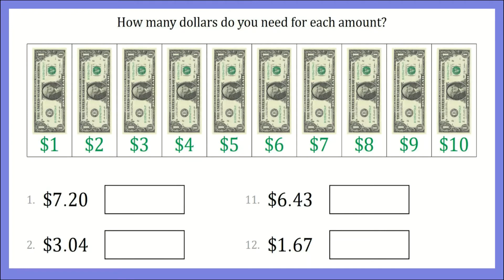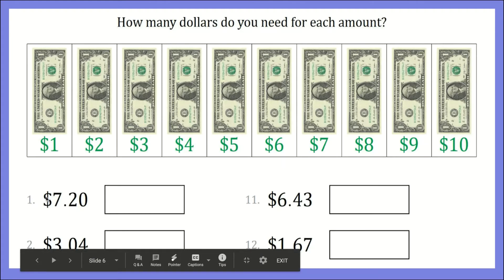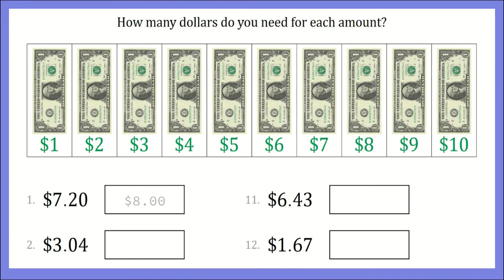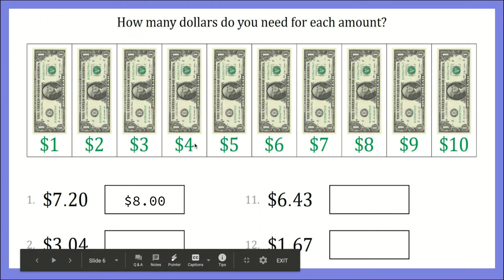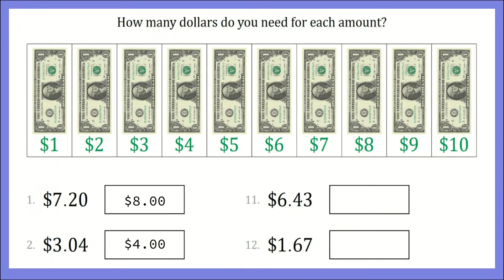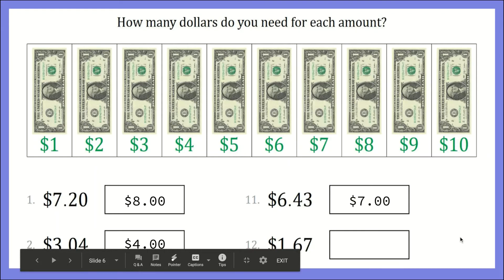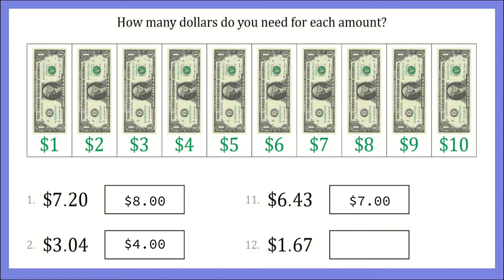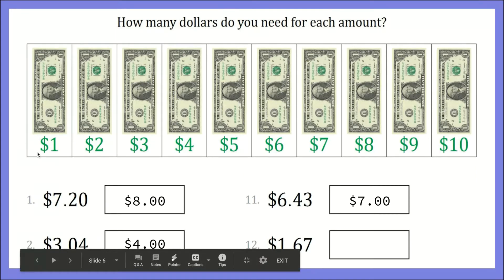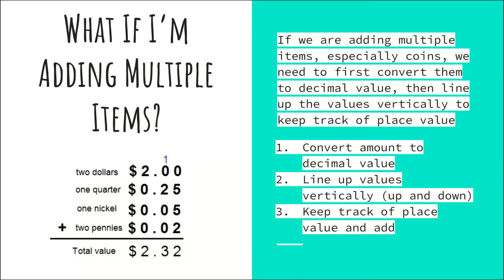We went over this last week, but it's healthy to review. Remember: we are looking at the cash value next to the dollar sign — not the coins to the right of the decimal point. Next dollar up for seven dollars and twenty cents is eight dollars. Next dollar up for three dollars and four cents is four dollars. Next dollar up for six dollars and forty-three cents is seven dollars. Next dollar up for one dollar and sixty-seven cents is two dollars.